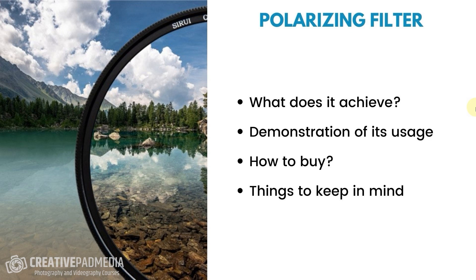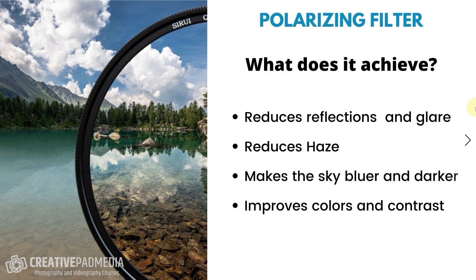So what does a polarizing filter actually achieve when you put it on top of your lens? The number one reason for using a polarizing filter is to reduce or cut out reflections and glare. As you can see in this photo, the left part of the water shows glare and reflections, but the filter just cuts through that and you can see everything clearly. We'll be seeing a live demonstration of this in just a few moments.